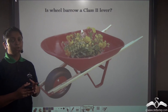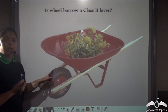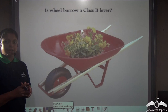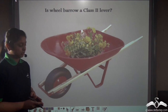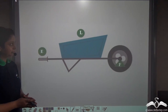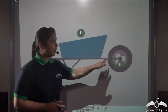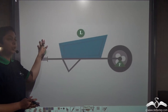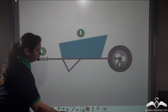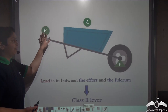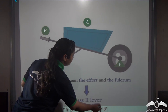What about a wheelbarrow? We know wheelbarrows are levers, but are they a class 2 lever? To find out, we need to determine the positions of the fulcrum, load, and effort. The fulcrum is located at one end, the load is in between, and the effort is applied on the handles at the other end. So yes, a wheelbarrow is a class 2 lever.